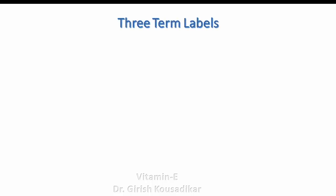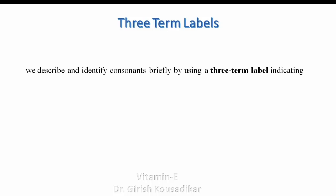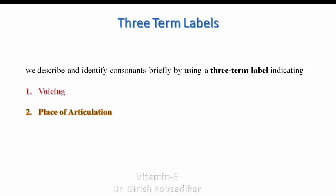Three-term label is nothing but identification and description of a sound. The first term indicates voicing. The second term indicates the place of articulation, and the third term indicates manner of articulation. These are the three terms. Let us go into a deep study of these three-term labels in order to understand them well.